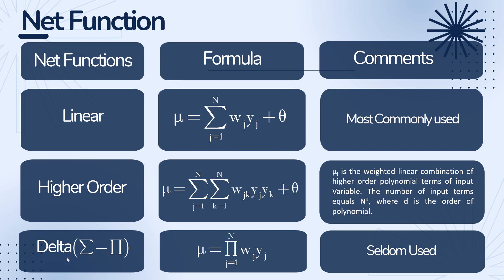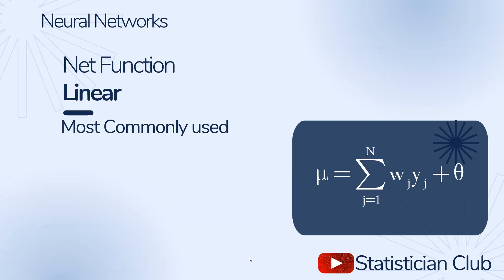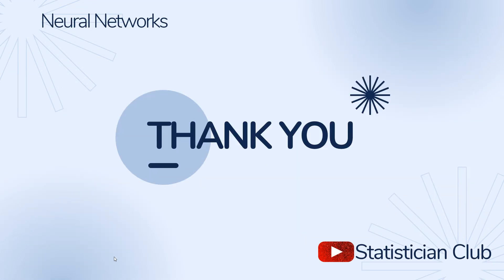mu is equal to product j=1 to n of wj yj. If you want to see videos on basics of neural network, what is activation function, topology in neural network, then click the link in front of your screen. Thanks for watching.